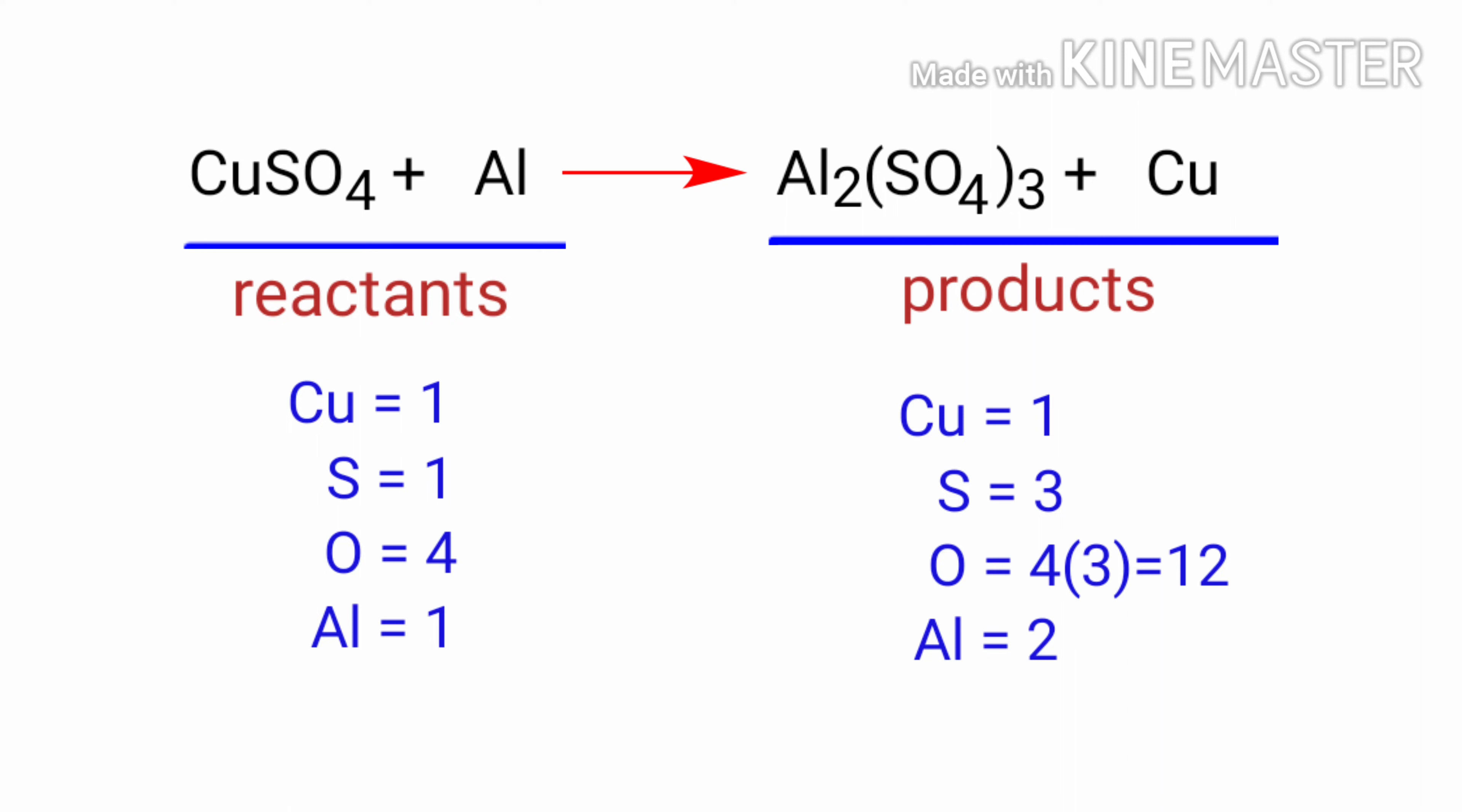The number of atoms are not balanced on both sides. To balance the chemical equation, we need to make use of coefficients. A coefficient is a number that we place in front of a chemical formula.